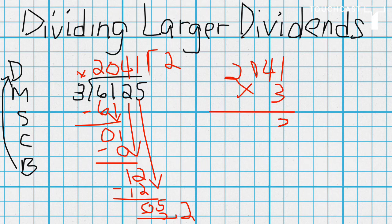3 times 1 is 3. 3 times 4 is 12. Put the 2 in the tens, carry the 1. 3 times 0 is 0, plus 1 is 1. 3 times 2 is 6. Then we have to add our remainder, which is 2.